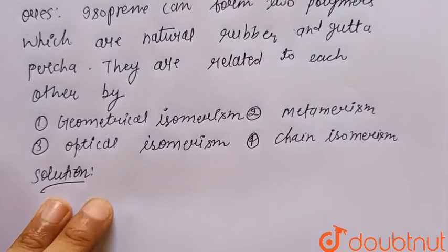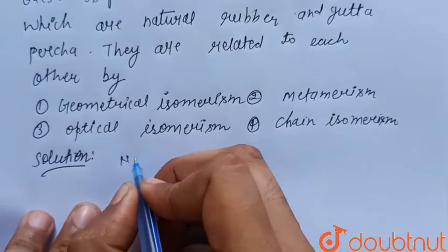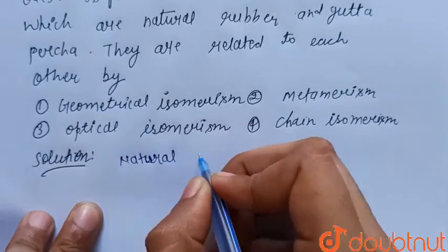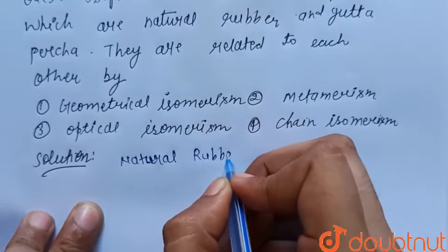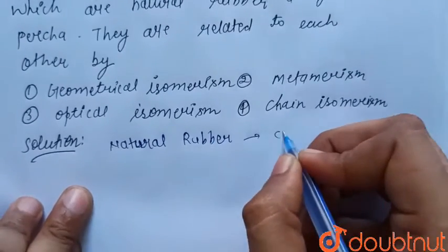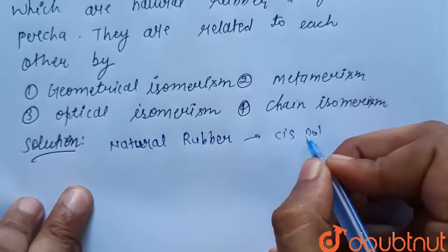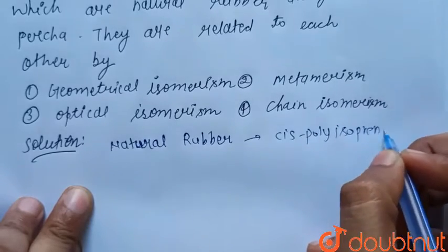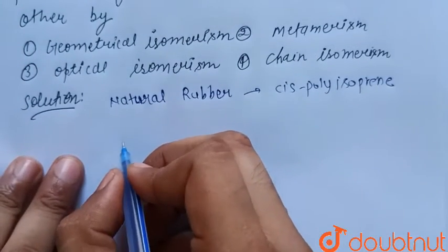So we know that natural rubber is cis polyisoprene and its structure is this.